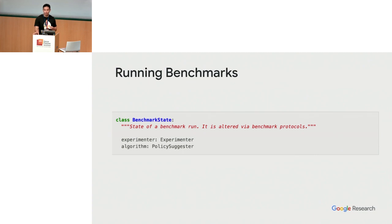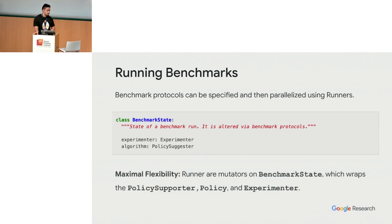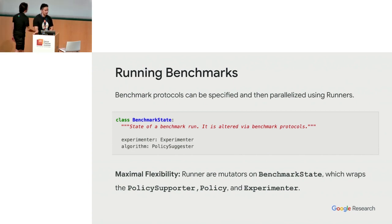We care a lot about states and serialization to ensure fault tolerance and easy visibility. The benchmark state has the experimenter — essentially the objective function — and the algorithm, known as a policy suggester, which wraps the policy and the policy supporter. The policy supporter is essentially the data store; the policy is the algorithm supported by it. Our benchmark protocols are essentially mutators that can be parallelized to run across different benchmark states, designed for maximal flexibility.